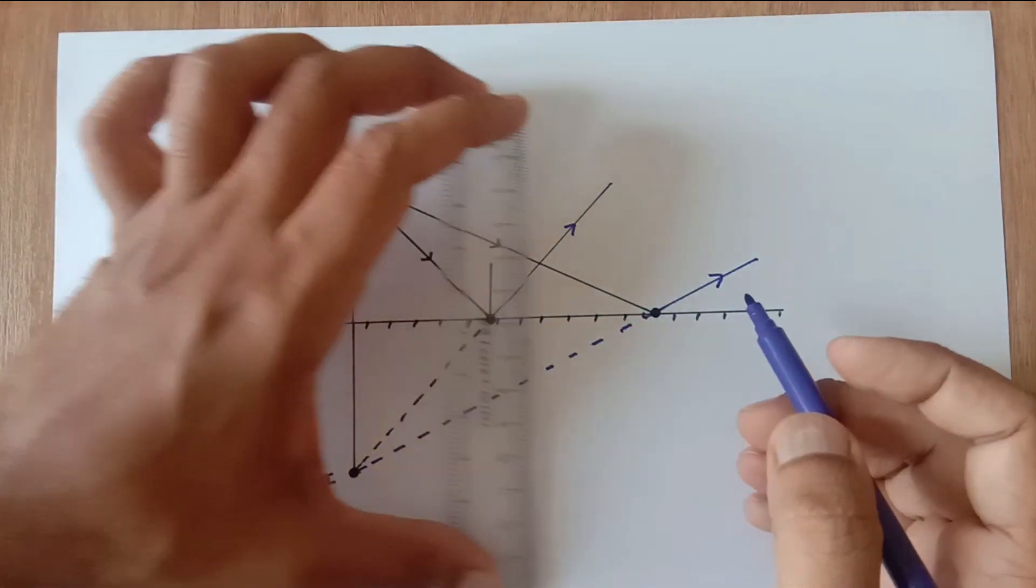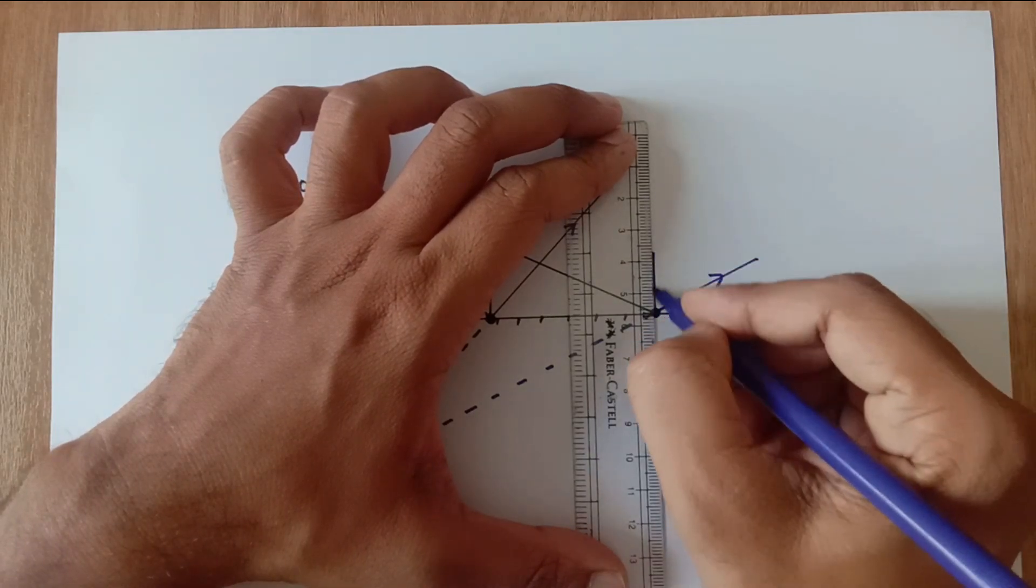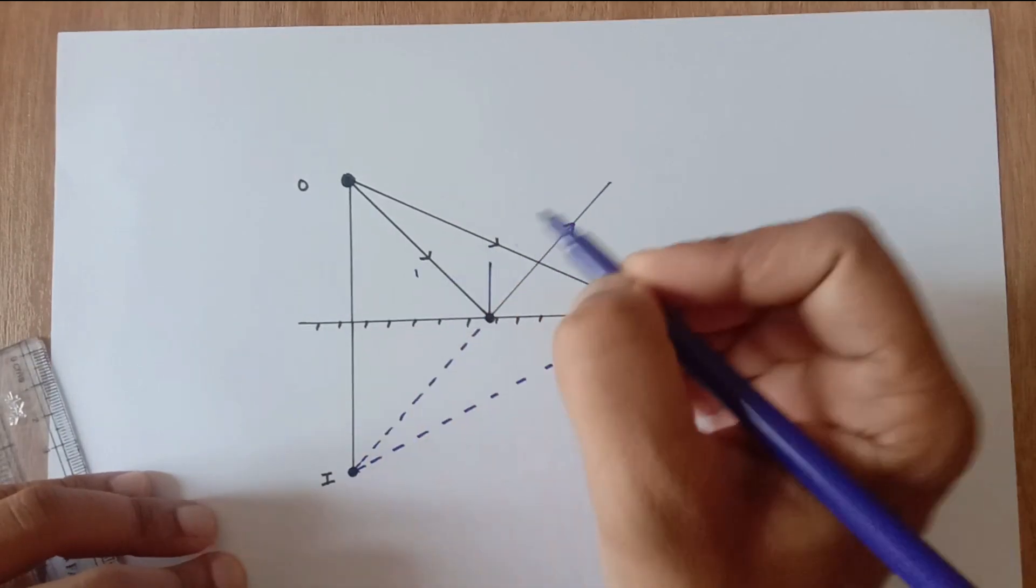Now we know that normal originates from the point of incidence and it is perpendicular to the mirror and the angle bisector. Simply use scale and draw as shown.